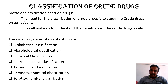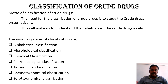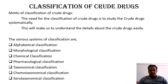The various systems of classification available are: alphabetical, morphological, chemical, pharmacological, taxonomical, chemotaxonomical, and serotaxonomical. We are going to discuss each system in an elaborative manner in the subsequent sessions.